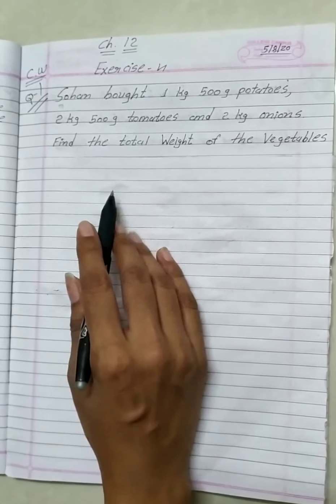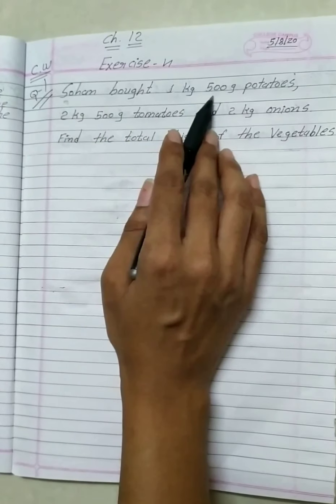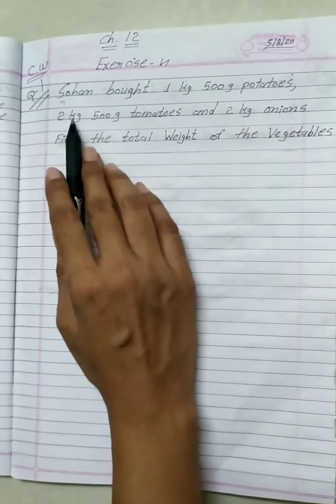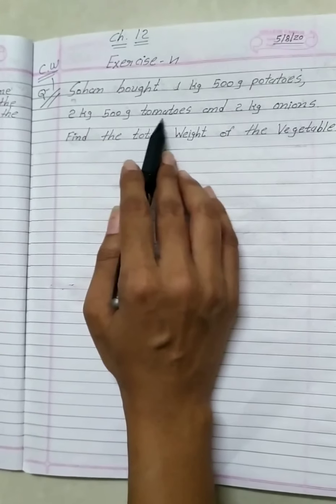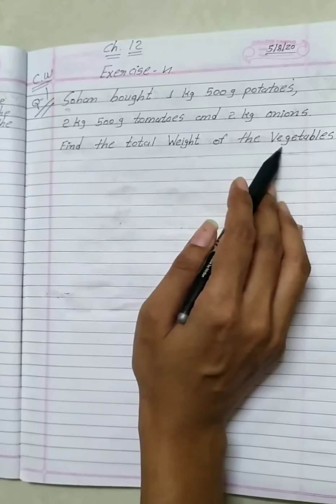Standard 3 Chapter 12 Exercise Number 4. Sohan bought 1 kg 500 gram potatoes, 2 kg 500 gram tomatoes and 2 kg onions. Find the total weight of the vegetables.